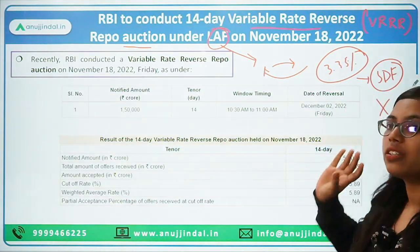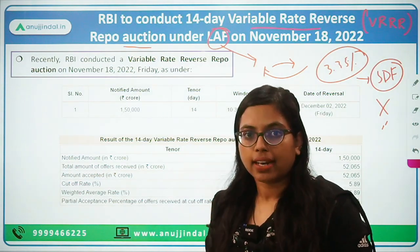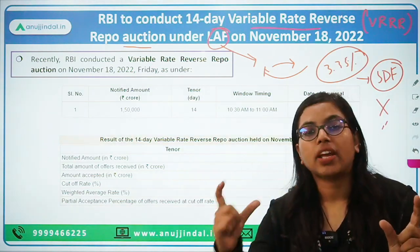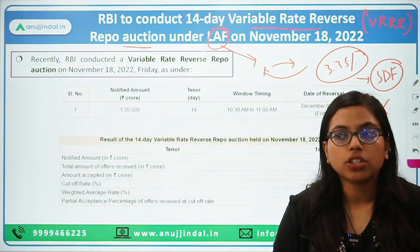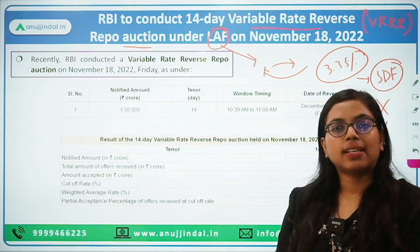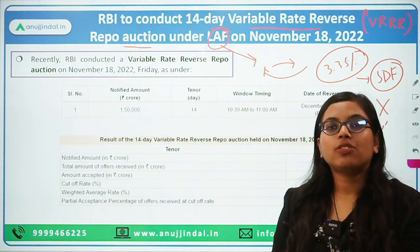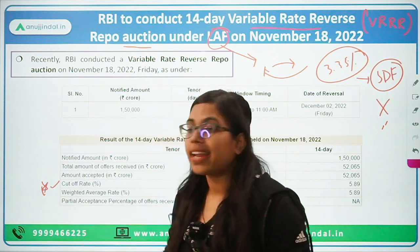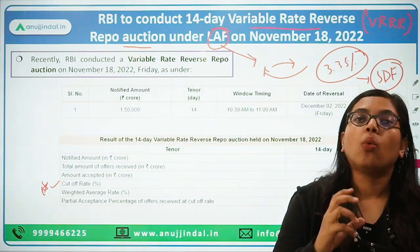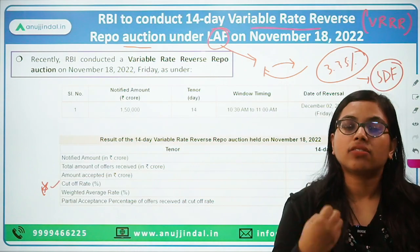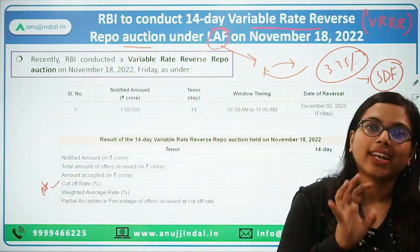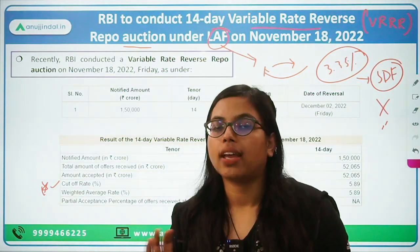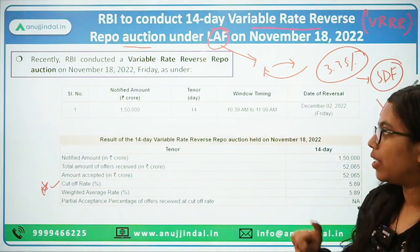Our agenda is to understand the variable reverse repo rate. The fixed repo rate is 3.35%, but this rate is quite low. So RBI conducts fixed as well as variable repo rate auctions, where based on an auction among commercial banks, a cut-off rate is decided. Banks place their bids and based on the auction, a cut-off rate is decided at which RBI will be taking excess funds from the banks — the rate at which banks can deposit their surplus funds with RBI. Hence the word 'variable' is used here.